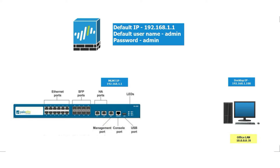Let's assume you have purchased one of the Palo Alto firewalls and you would like to configure it in your network. When this firewall arrives, it comes with default settings, which means a default IP address and default credentials. The default IP address is 192.168.1.1 and the default credentials are admin/admin.